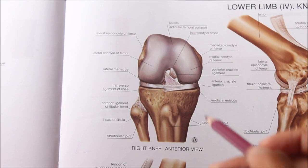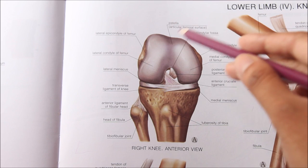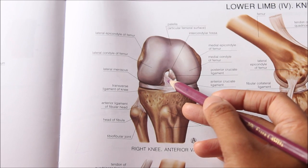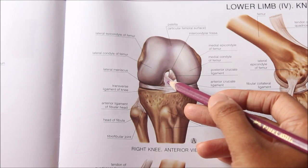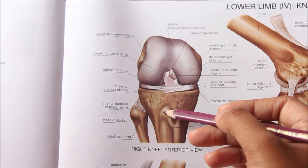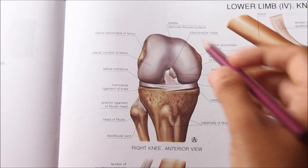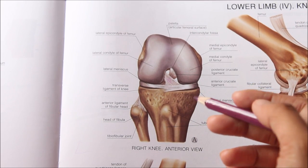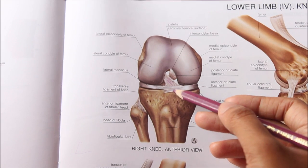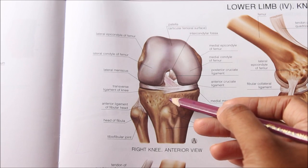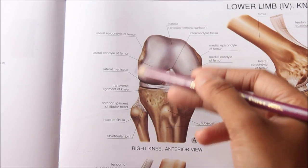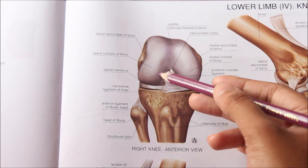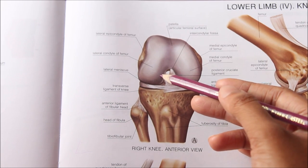The cruciate ligaments are very thick and strong fibrous bands. They act as direct bonds of union between the tibia and the femur to maintain anteroposterior stability of the knee joint, and are named according to their attachment on the tibia. The anterior cruciate ligament begins from the anterior part of the intercondylar area of the tibia, runs upwards, backwards and laterally, and is attached to the posterior part of the medial surface of the lateral condyle of the femur. It is taut during extension of the knee.